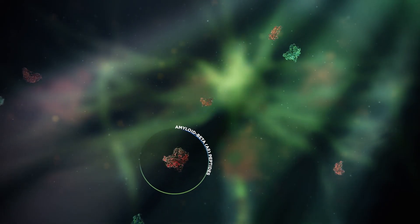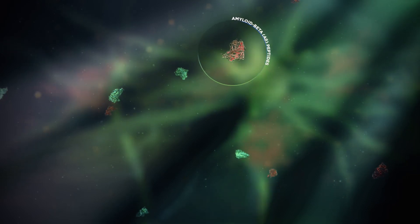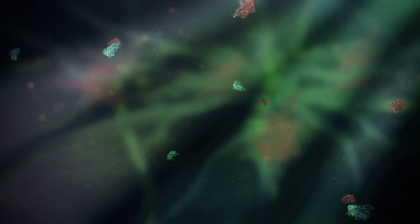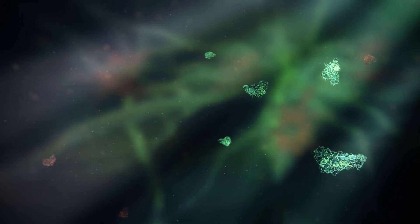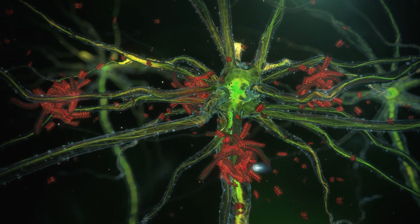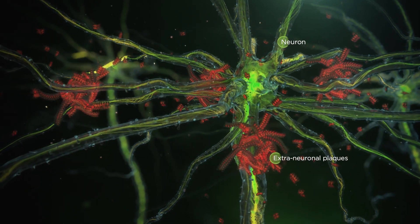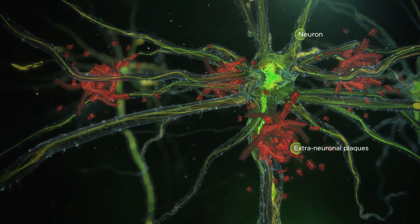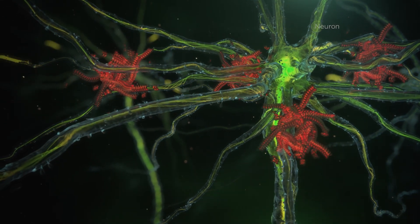In AD, the overproduction and reduced clearance of A-beta peptides lead to the formation of toxic soluble oligomers, causing an increase in inflammation and impacting neuronal function. As levels of soluble oligomers increase, the peptides aggregate into A-beta fibrils, eventually forming extraneuronal plaques, a key hallmark of AD pathology.